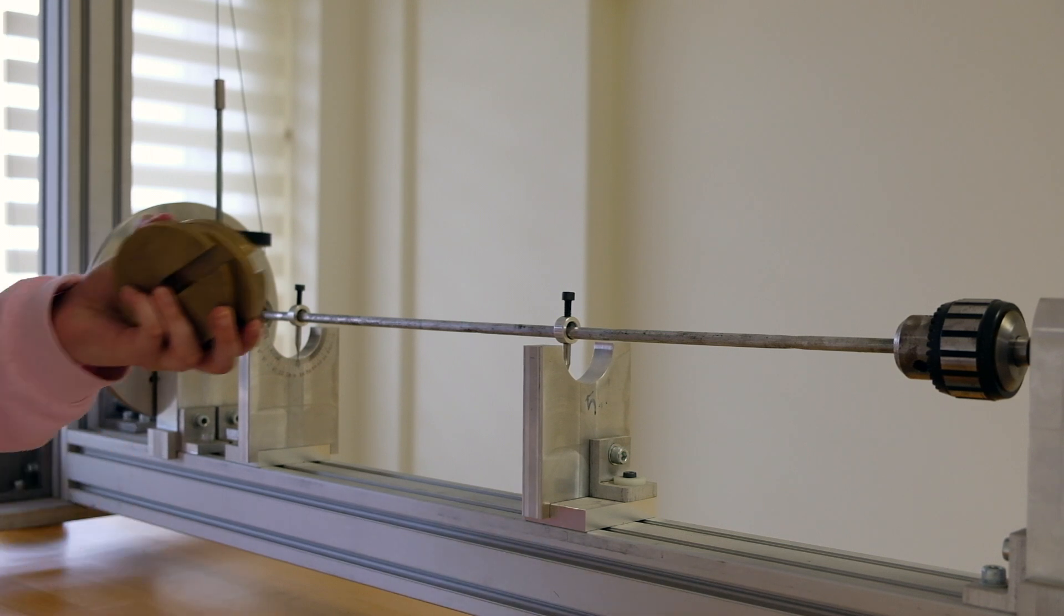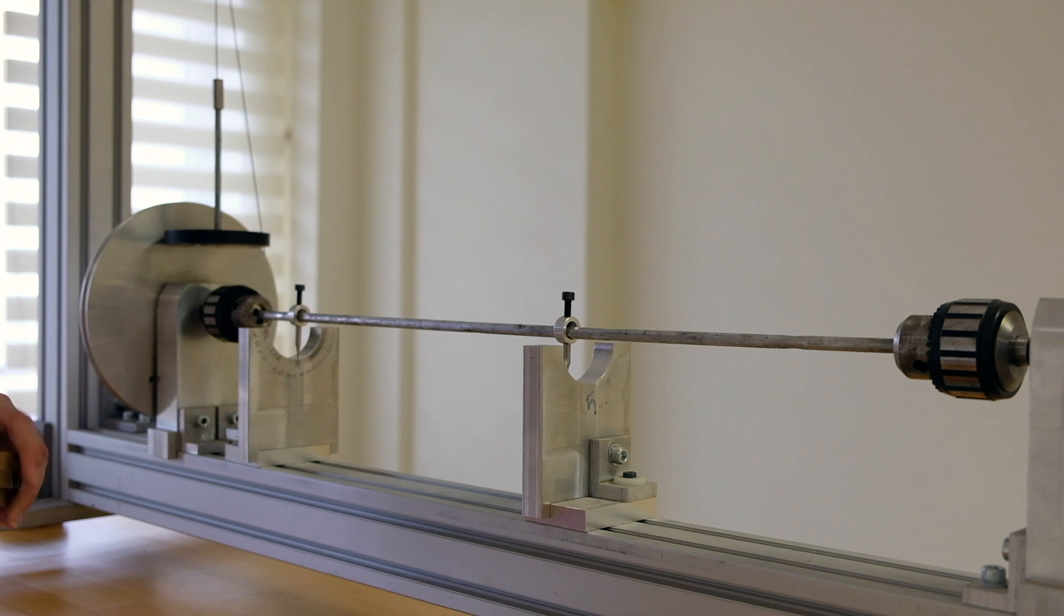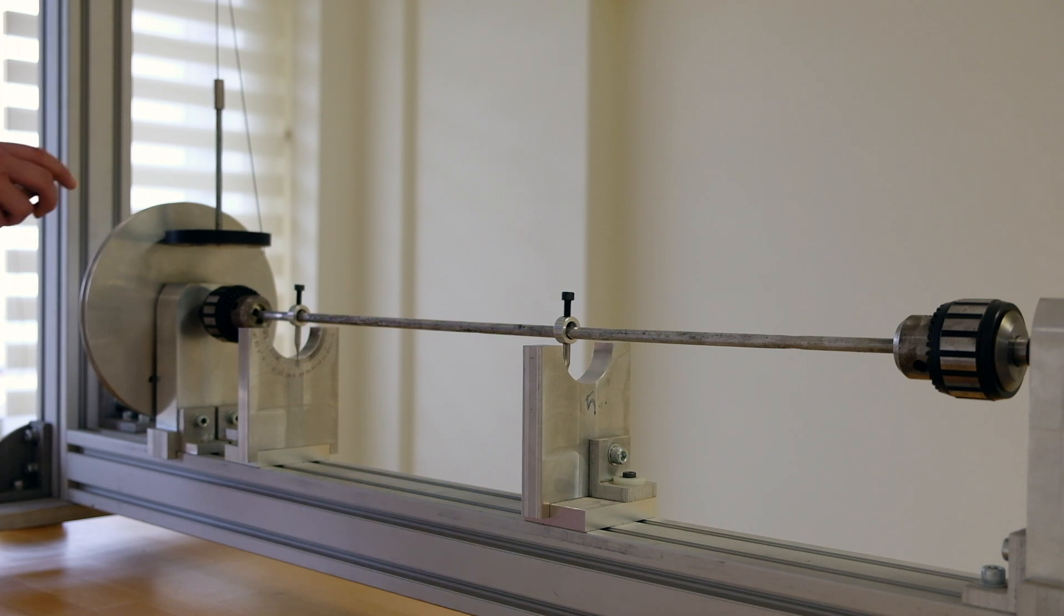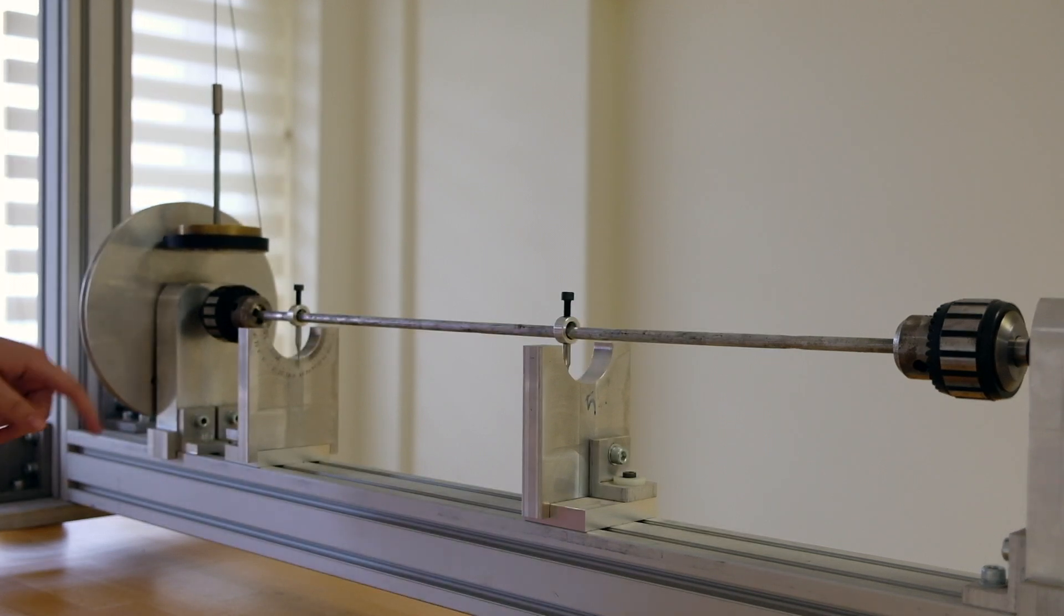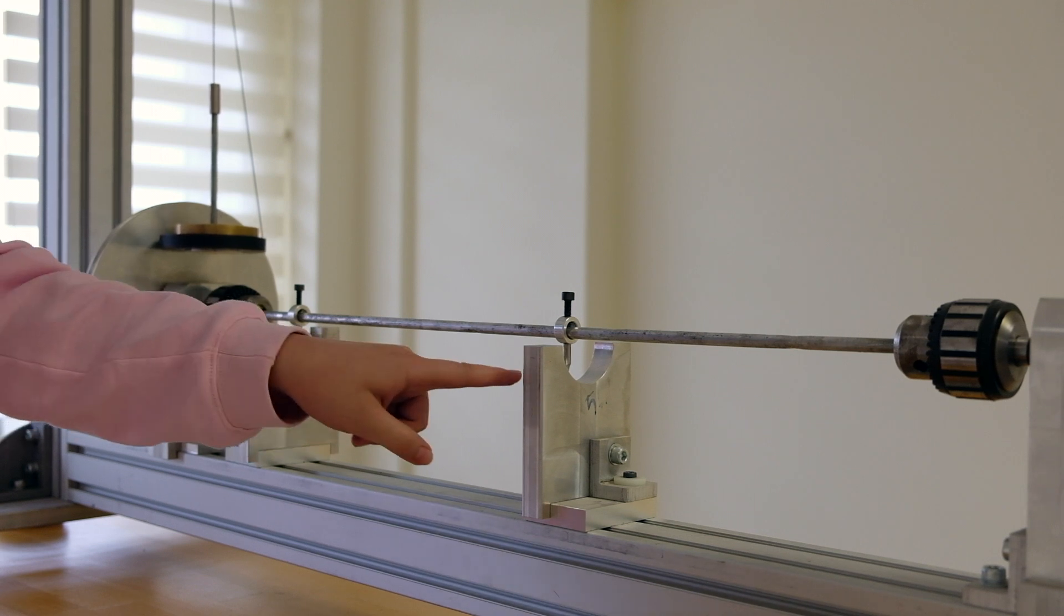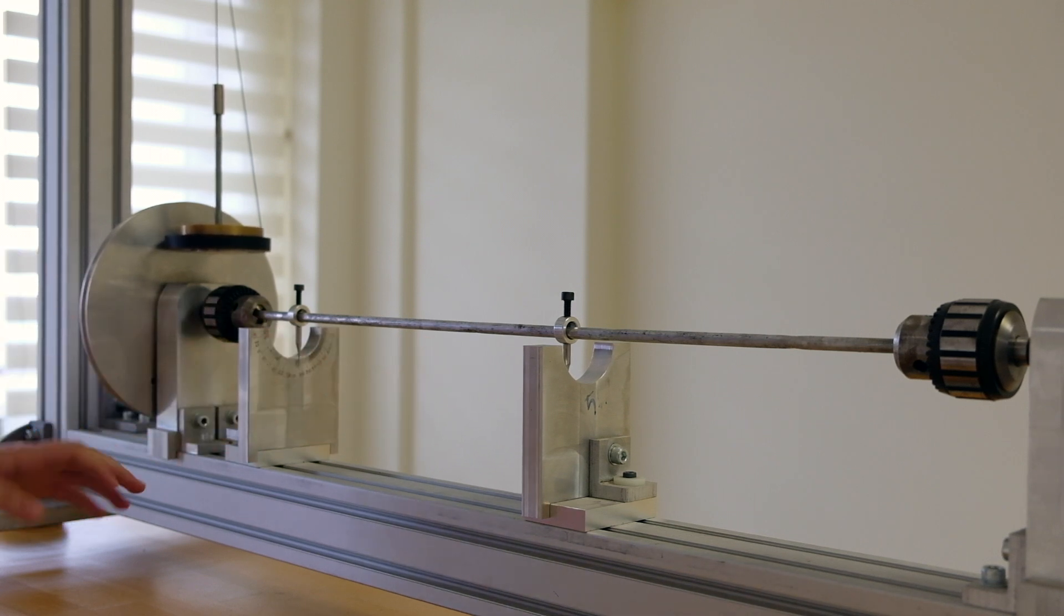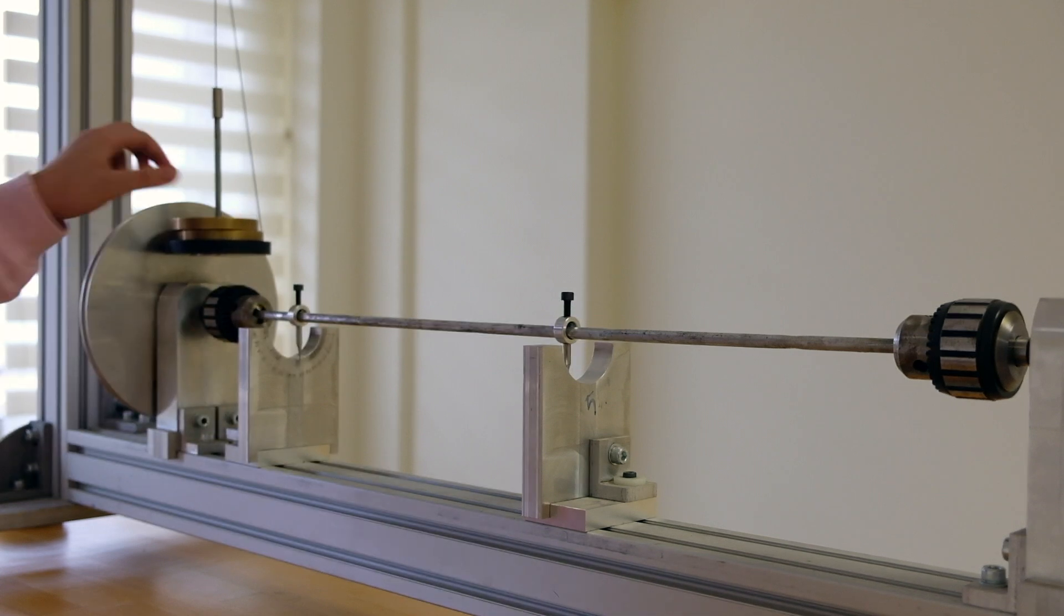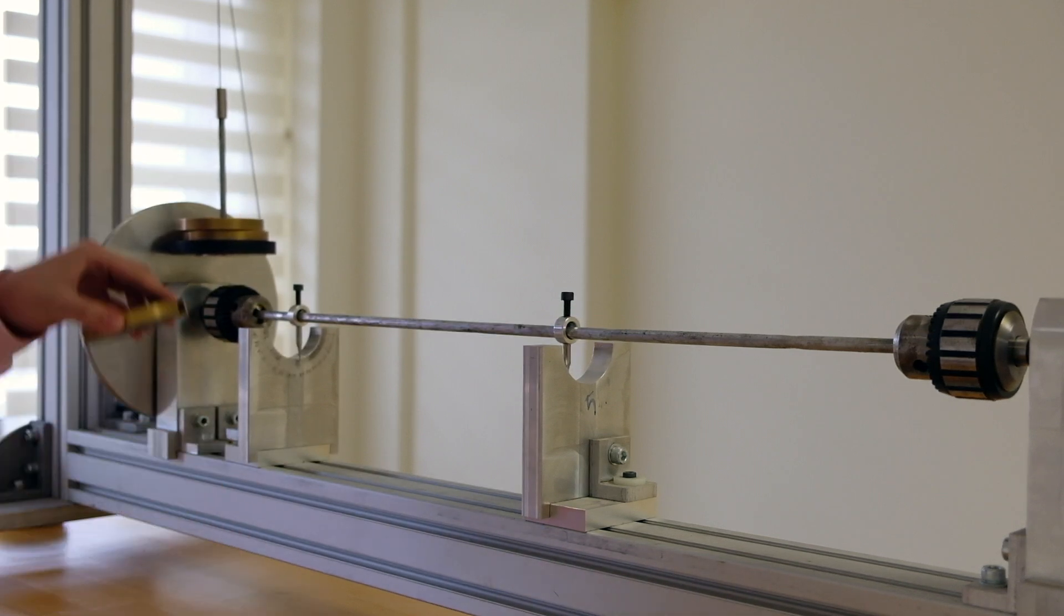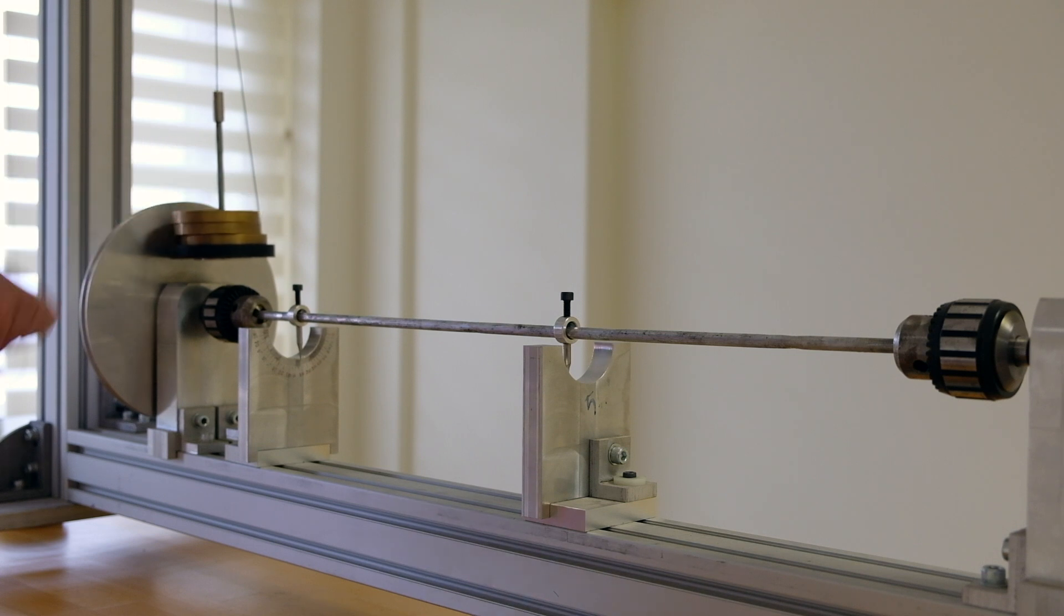You have three weights, each weighing 500 grams, and you will apply them gradually and record your results. First, you apply a load and then read the angle of twist on the two dials and record them. You have to repeat this for 1000 grams and then 1500 grams.